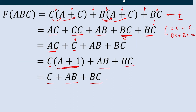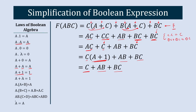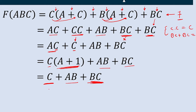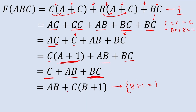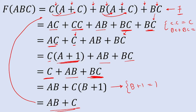From the two terms C and BC, we take C common, giving AB plus C·(B plus 1). Again applying A plus 1 equals 1, this simplifies to AB plus C. So the simplified version of this Boolean expression is A·B plus C.